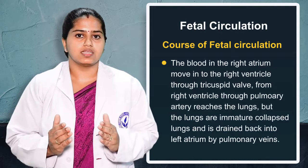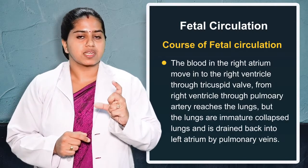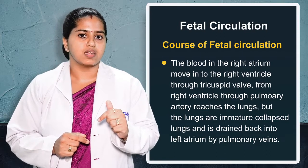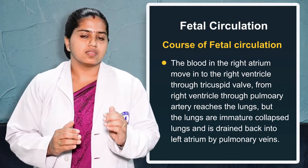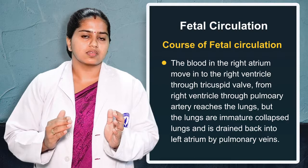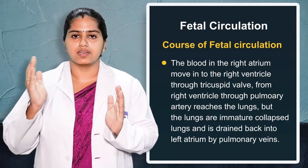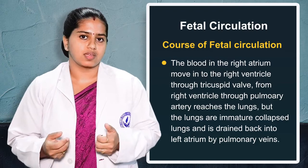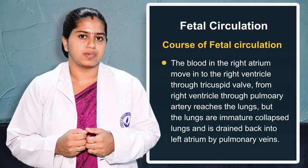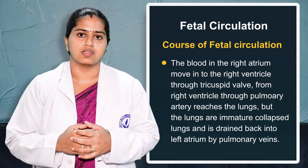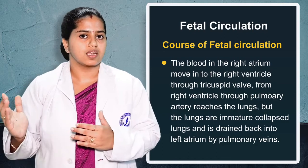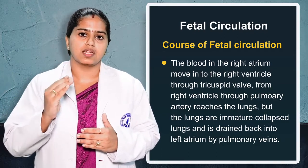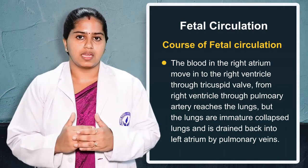From the right atrium, through the tricuspid valve, blood reaches the right ventricle. In the right ventricle the pulmonary artery is present. A small amount of blood is carried through the pulmonary artery and reaches the lungs. The lungs are immature and not fully working during the fetal period. Whatever blood returns from the lungs is carried by the pulmonary veins and reaches the left atrium.